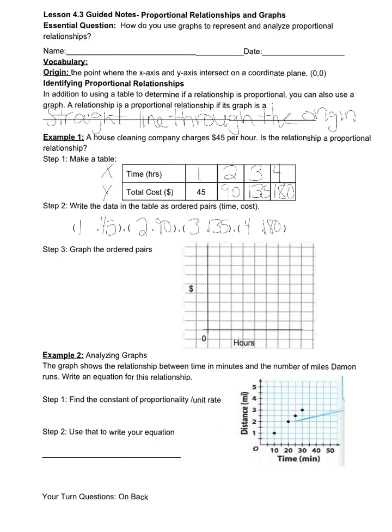Now to graph this, I'm going to plot my first point. So along the x-axis I've got 1 hour, 2 hours, 3 hours, and 4 hours. And along my y-axis I'm going to label my first as $45, $90, $135, and $180.